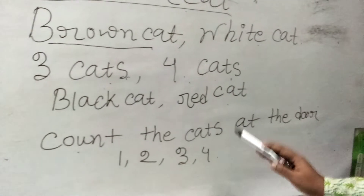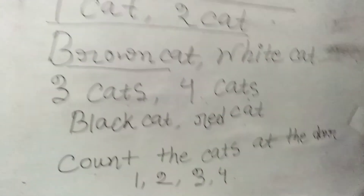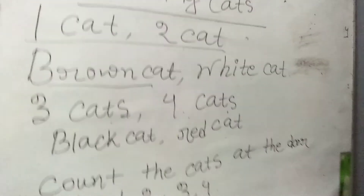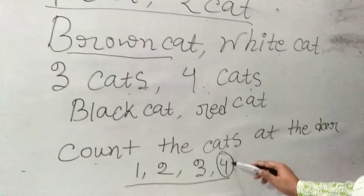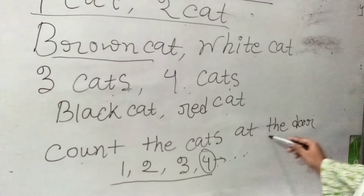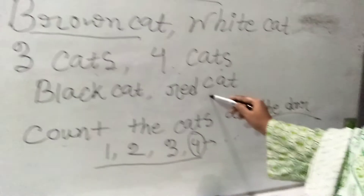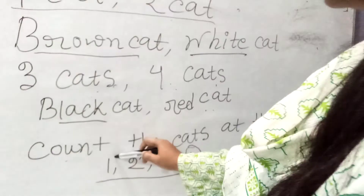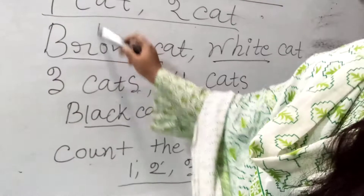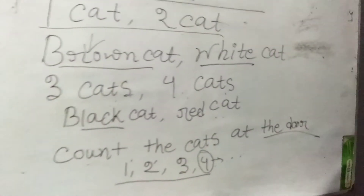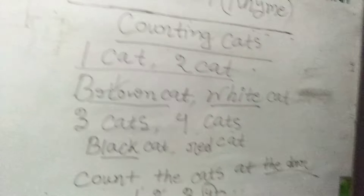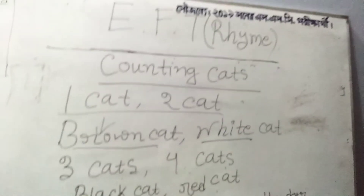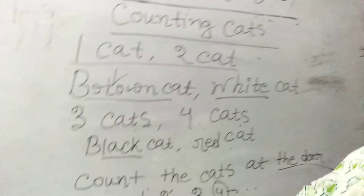Count the cats at the door — one, two, three, four. Count the kids at the door — one, two, three, four. There are four cats. The fourth one is standing right beside the door. So the fourth is red, the third is black, the second is white, and the first is brown — four cats in different colors.